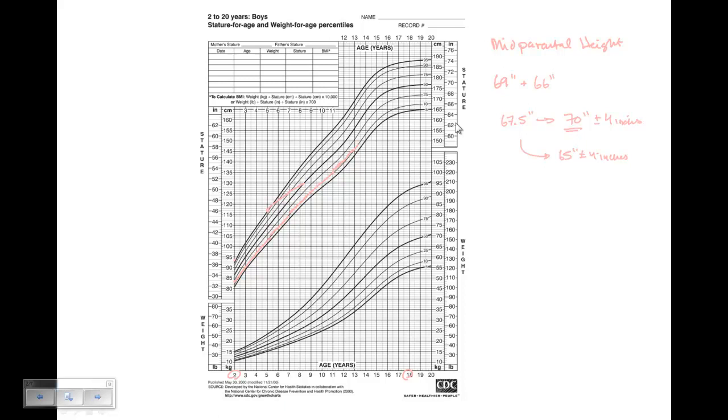This is the boy's curve. So let's plot the 70 inches. 70 inches is right over here. And then the range of 74 to 66, pretty broad range. But if we had a child who was growing well below the curve and we thought the midpoint should be about the 50th percentile, that child would be short for the family. So we always like to take the family heights into account.